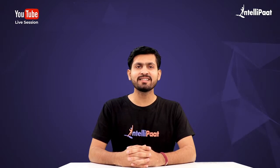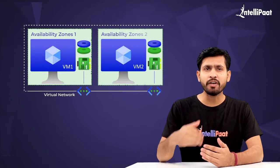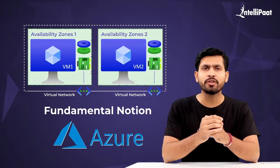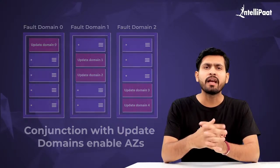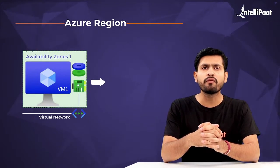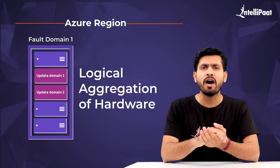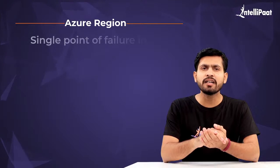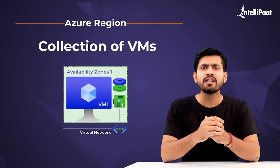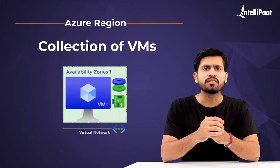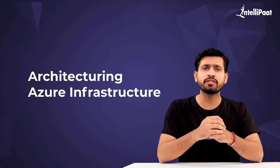Hello everyone, and welcome to today's session on fault domain versus update domain. Availability zones are fundamental notions of Microsoft Azure. Fault domains in conjunction with update domains enable Azure regions. An availability zone is made up of a fault domain and an update domain. A fault domain is a logical aggregation of hardware that can avoid a single point of failure in an availability zone. It can also be considered as a collection of virtual machines that share a common network, such as a switch or a power source.